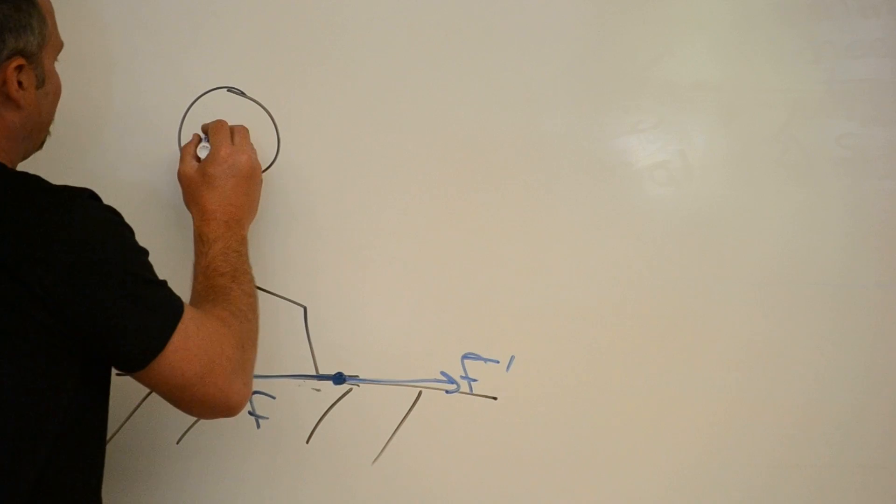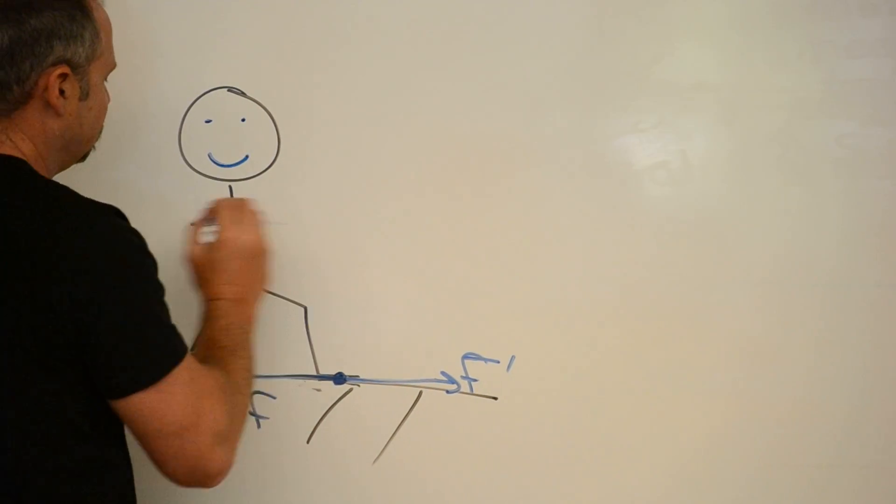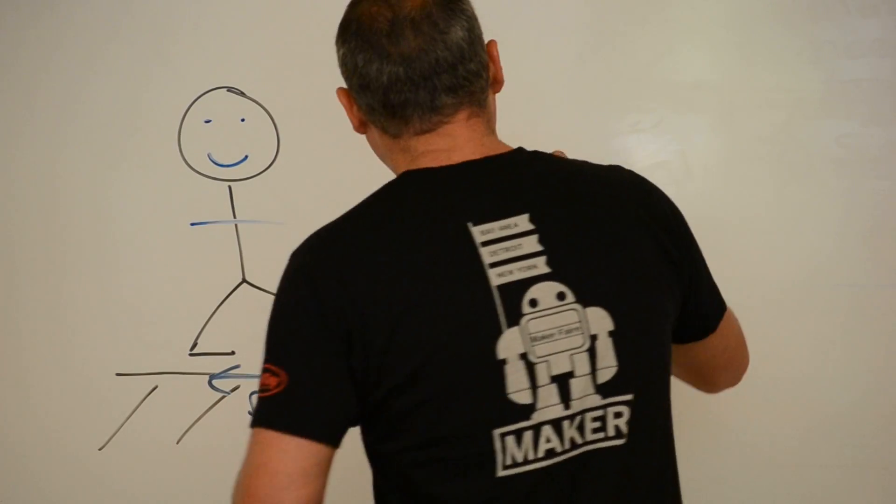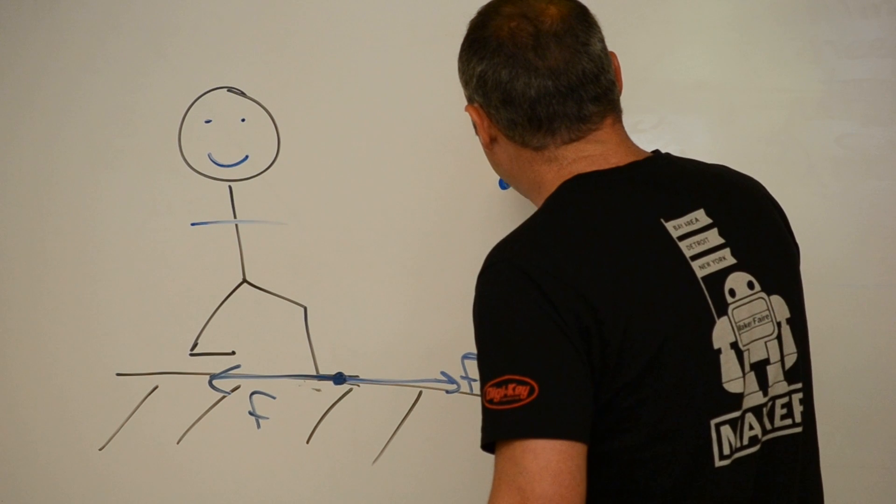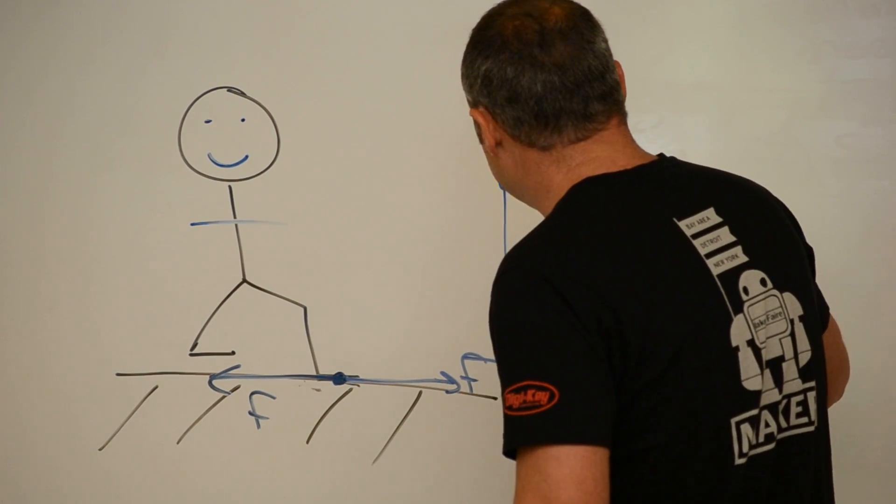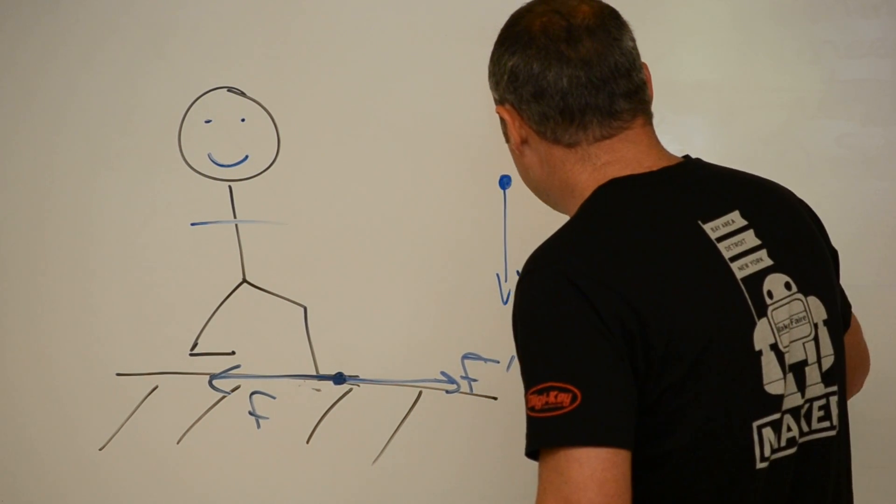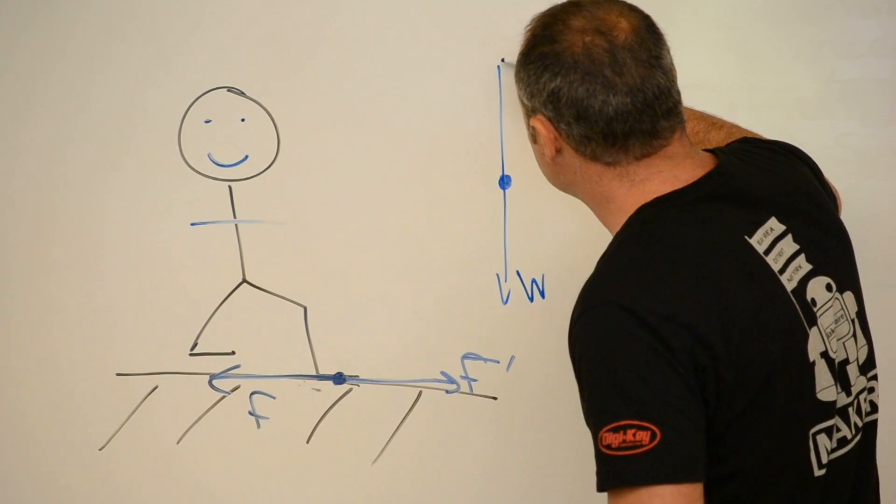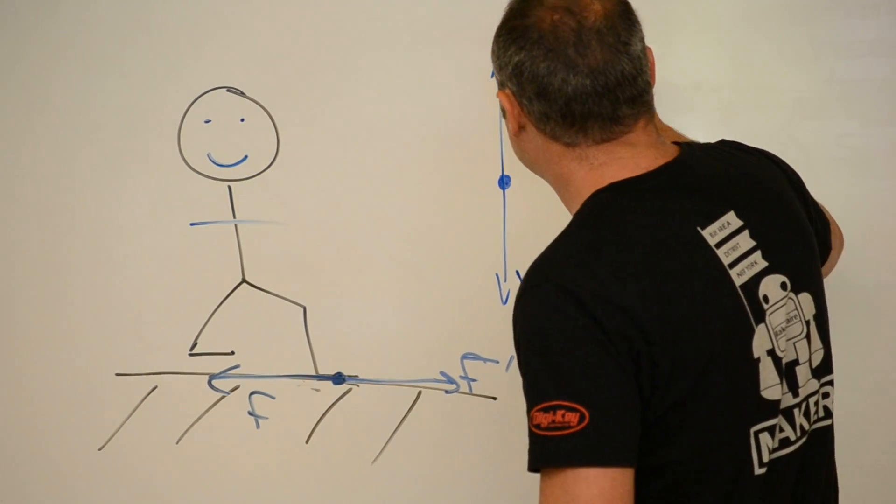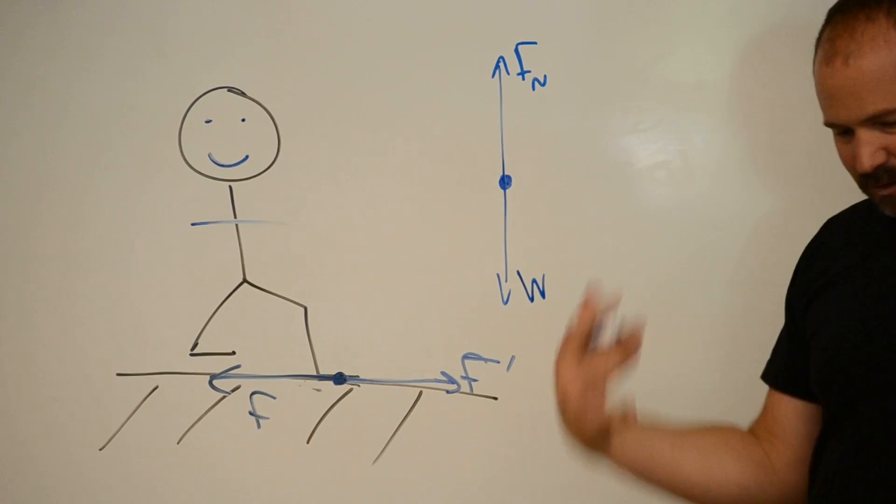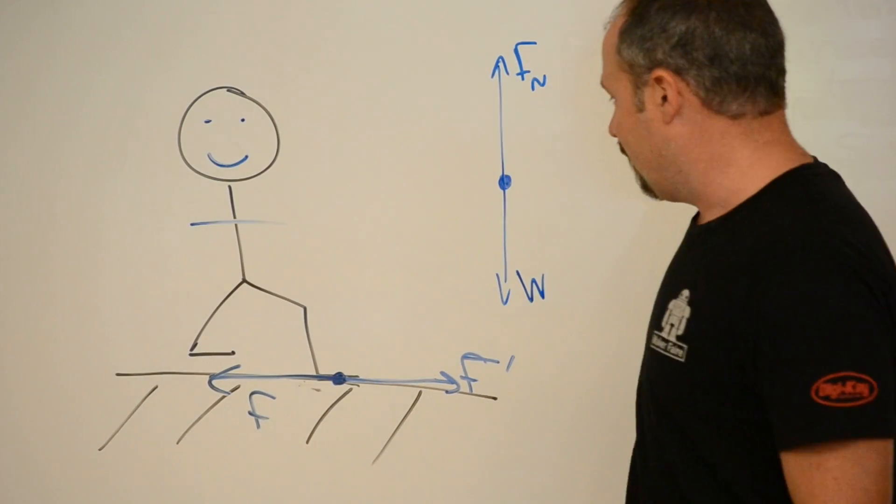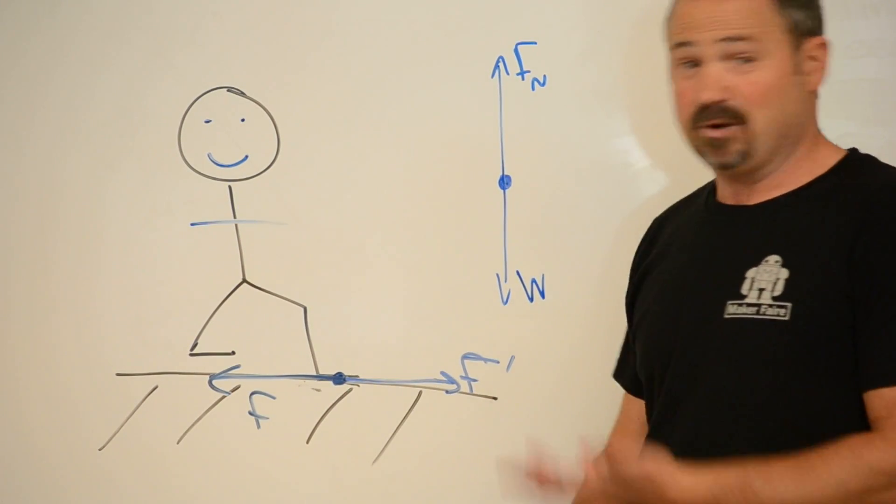If I were to draw my free-body diagram, let's give me some arms there. If I want to draw my free-body diagram, of course, we have the force of gravity pointing down, otherwise known as your weight. We also have the normal force equal and opposite to the force of gravity. And I know it's equal and opposite because I'm not accelerating.